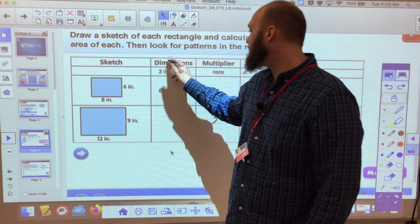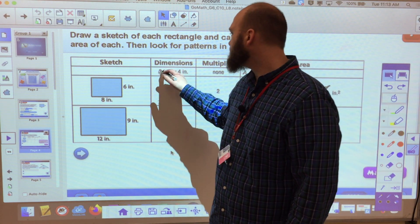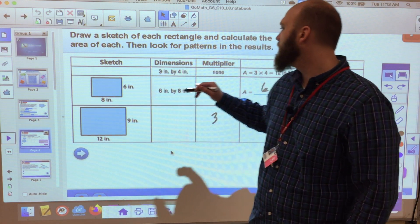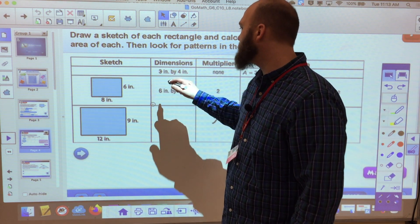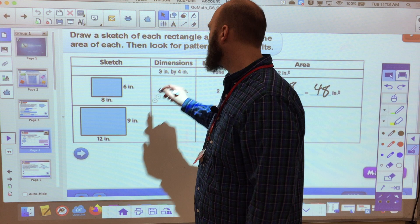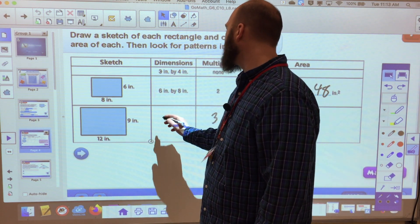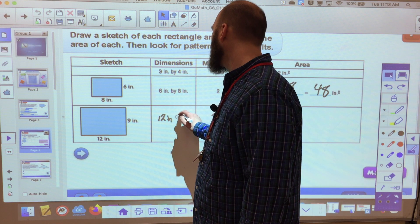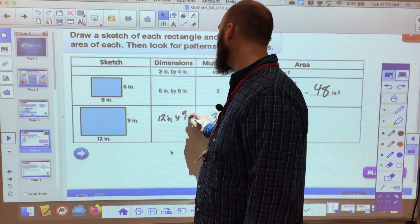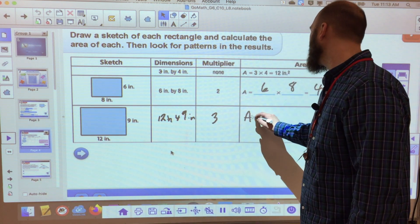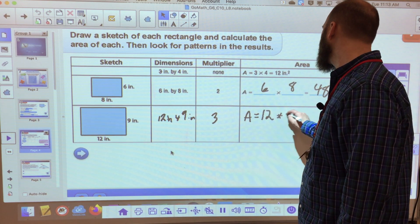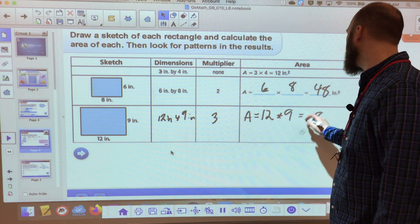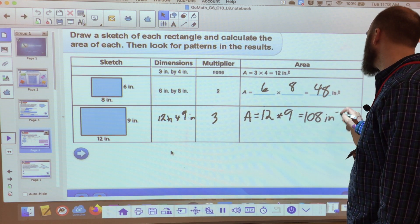Same idea. The new dimensions, if I go times three, three times the original, which would be three inches. Three times three is nine, and three times four is 12. So this is now dimensions of 12 inches by nine inches. So area equals 12 inches times nine inches. Nine times 12 is 18 plus one. That's 108 inches squared.